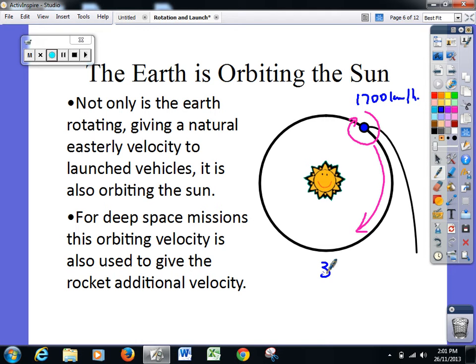This gives us approximately a 33,000 km per hour boost to get a satellite or a probe from the surface of the Earth to another planet.